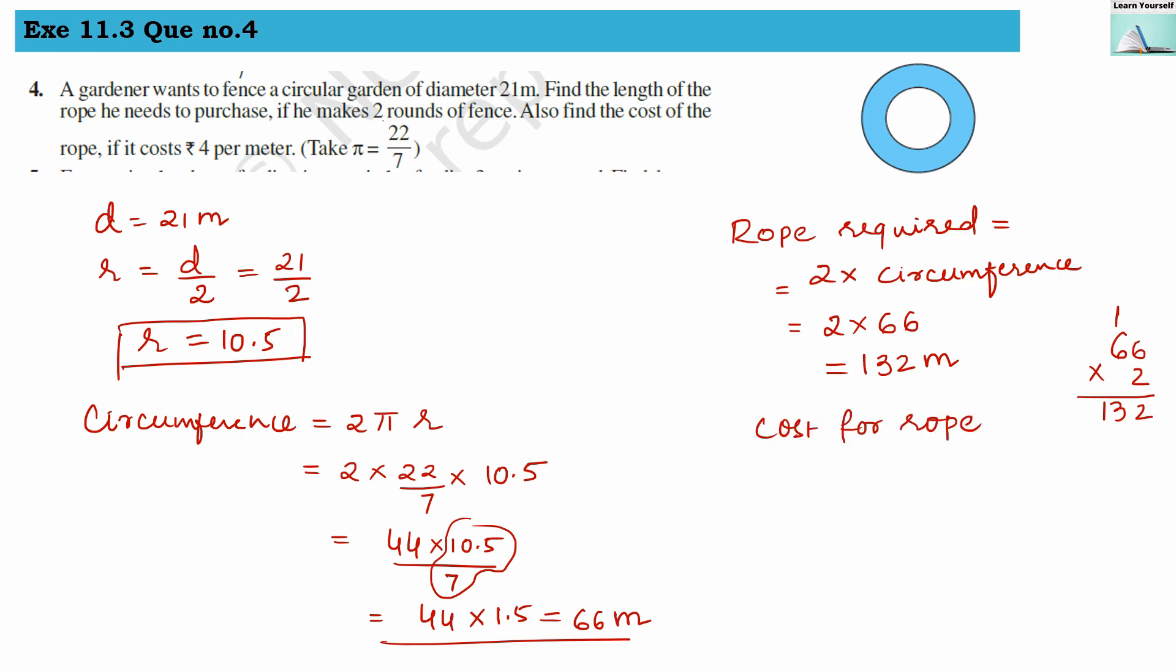Now let us find out the cost. They have said that it costs rupees 4 per meter. You can directly multiply 4 with this, or follow the unitary method. For 1 meter the cost is rupees 4. We have 132 meters equals how much? So according to unitary method, 4 times 132 will give us 528 rupees. This will be the cost for this rope.